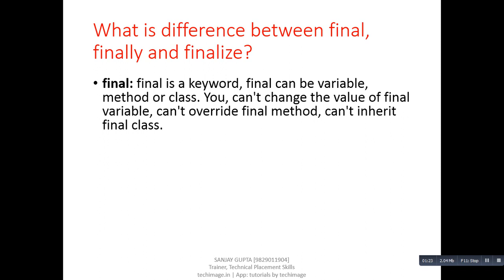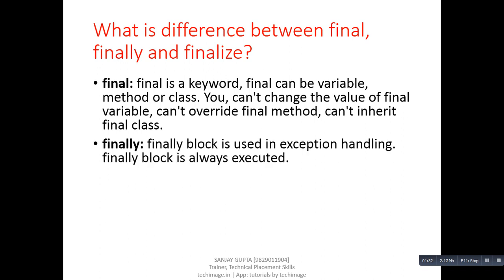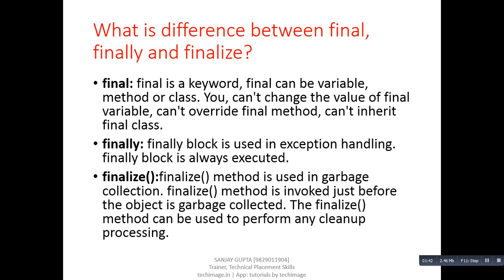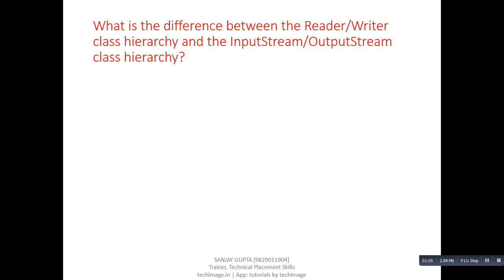Next question: what is the difference between final, finally, and finalize? Answer: final is a keyword — a variable, method, or class can be final. You can't change the value of a final variable, can't override a final method, and can't inherit a final class. finally is a block used in exception handling and is always executed. finalize is a method used in garbage collection, invoked just before the object is garbage collected, and can be used to perform cleanup processing.